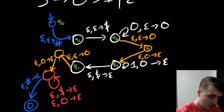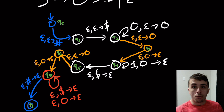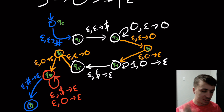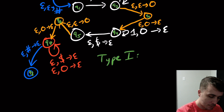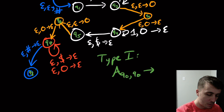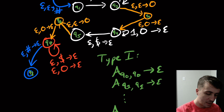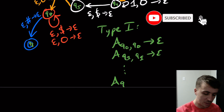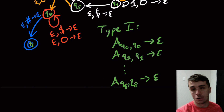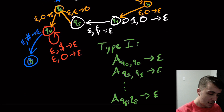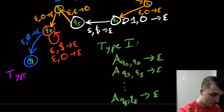Recalling the rule types: the first type of rule has A_{q_i, q_i} going to epsilon for any state. So for type 1 rules we have A_{q0,q0}→ε, A_{q1,q1}→ε, and so on up to A_{q8,q8}→ε. That gives us nine type 1 rules, one for each of the nine states.